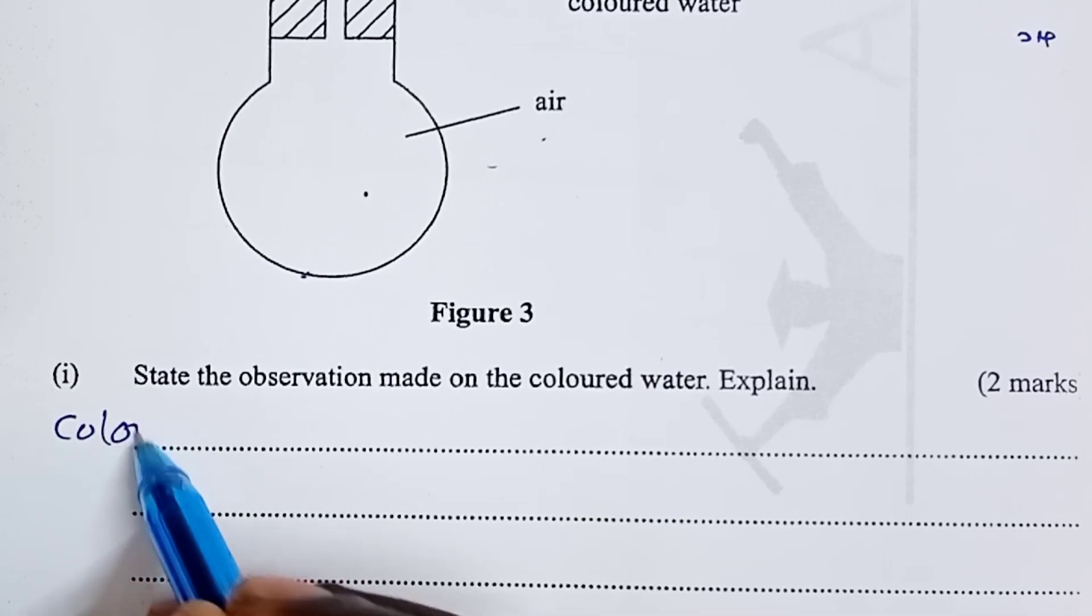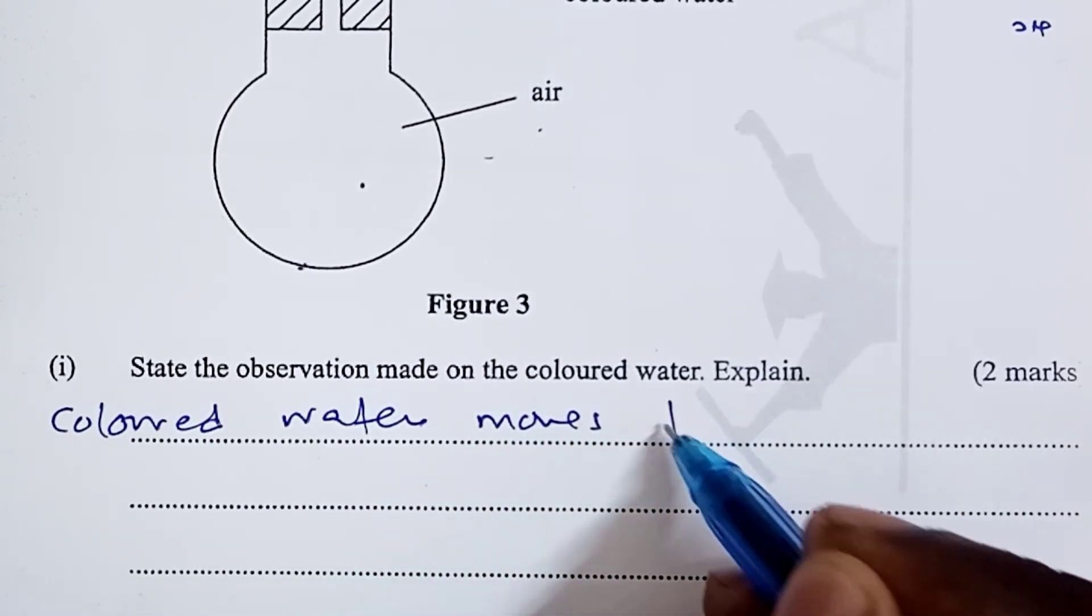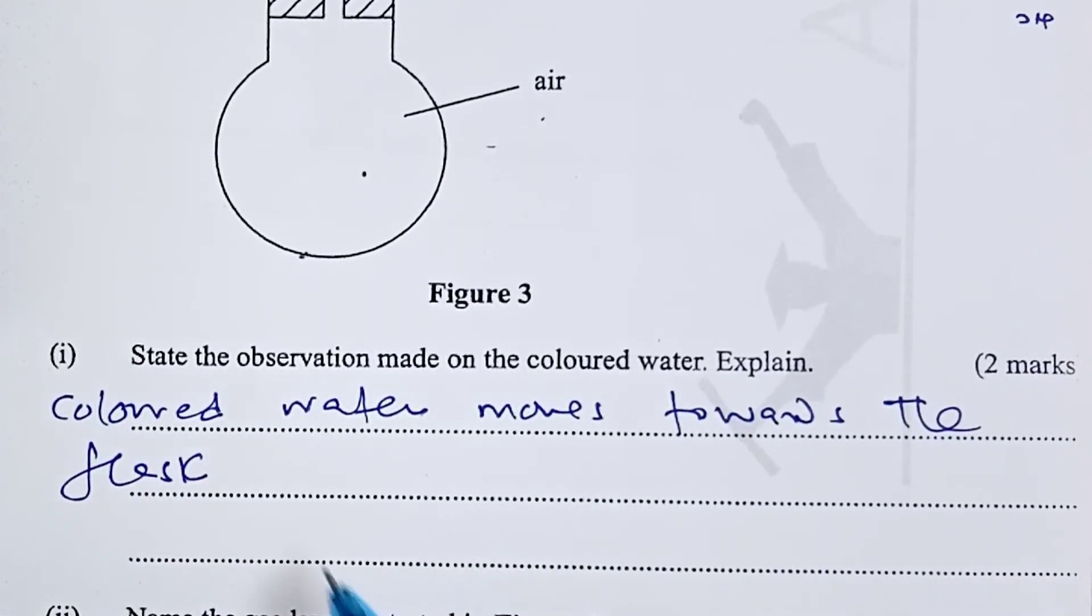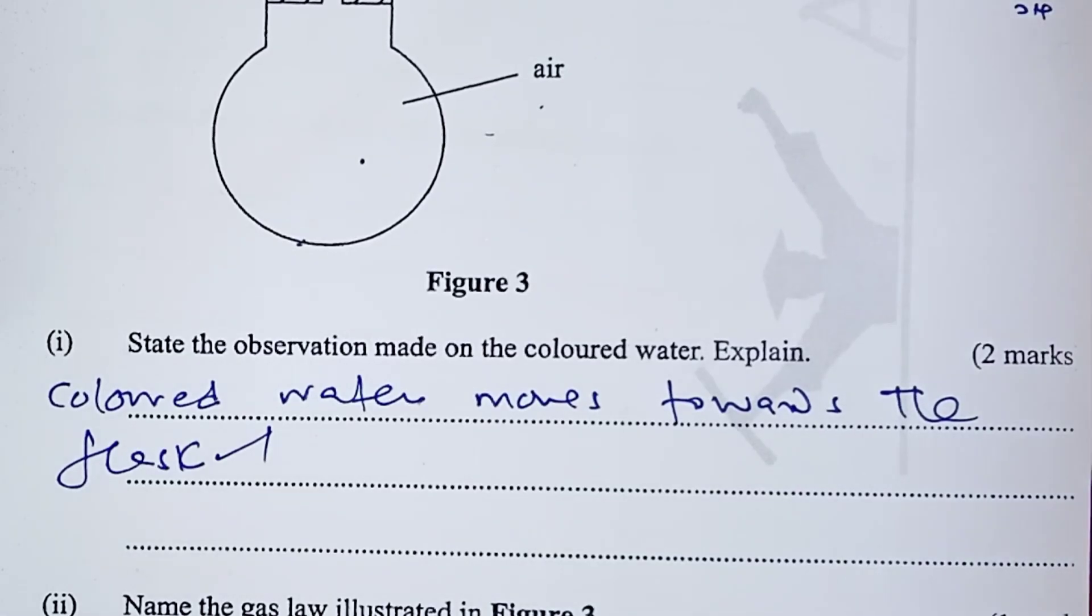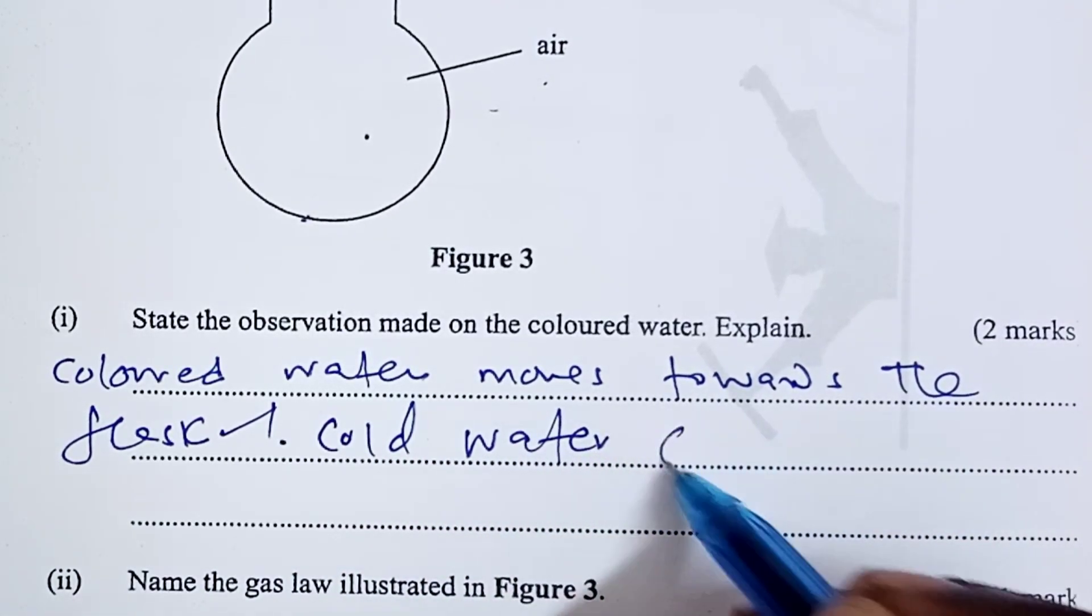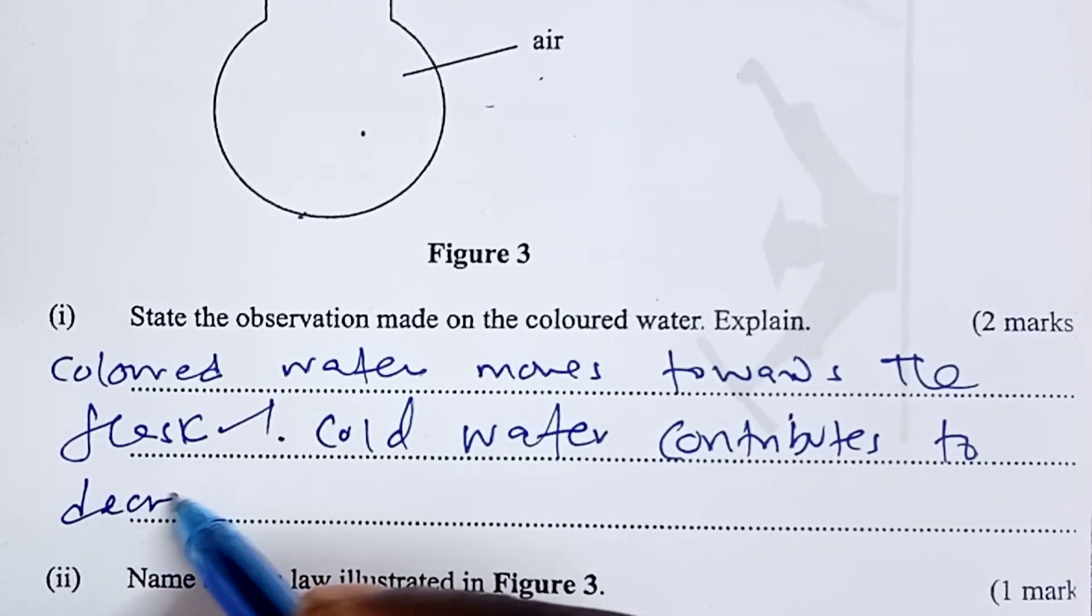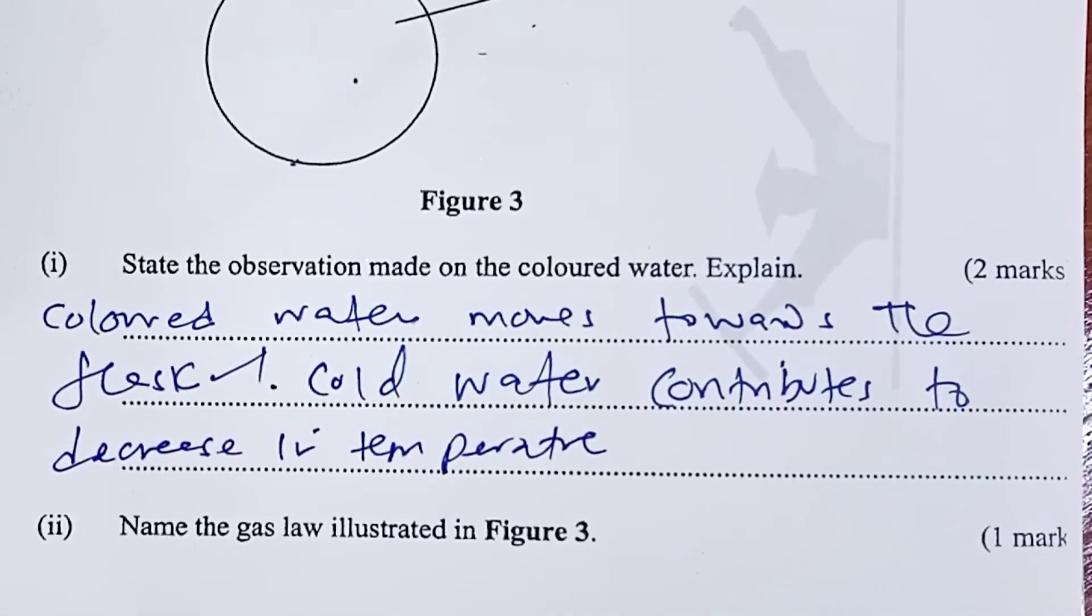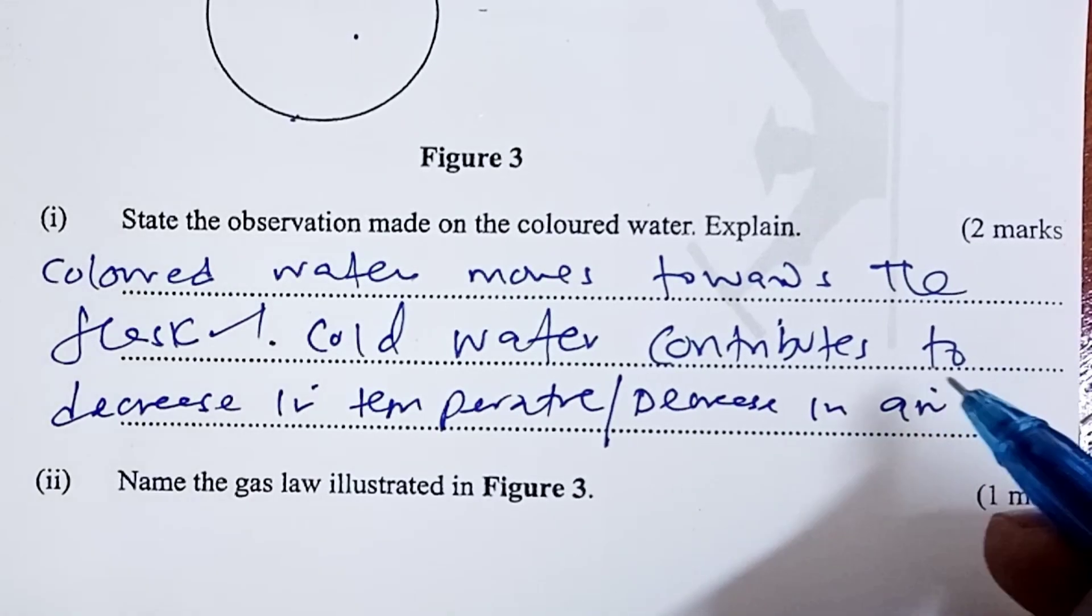That was what the examiner expected. But, I know for those who do physics, we may think otherwise. That actually is the flask that will contract, and therefore, this would make the colored water to move away from the flask. That is physics. In chemistry, we don't mind what happens to the flask.